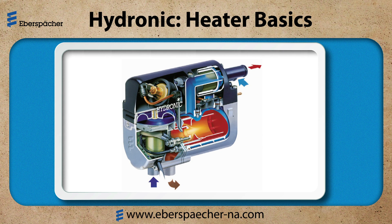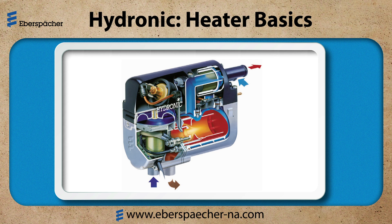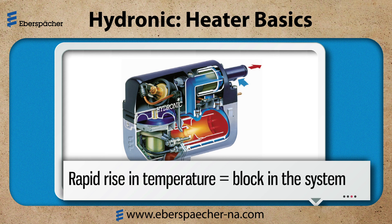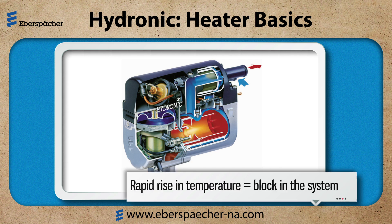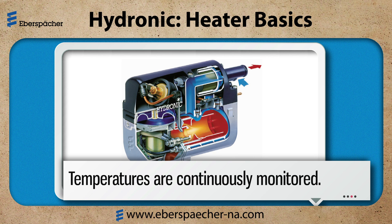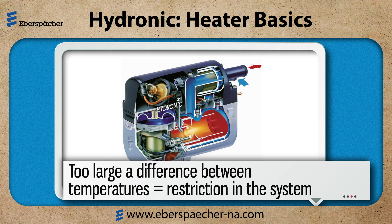Let's take a look at the Hydronic D5WSC. Here are the major components: the fuel metering pump, which can be internal or external on this model, the circulation pump, and then the overheat and temperature sensors. These monitor the temperature of the coolant when it enters the heater and as it exits. If there is a rapid rise in temperature, then the unit will overheat and shut down — this is indicating a block in the system. Otherwise, they will continuously monitor temperatures. They run parallel to each other on a graph; if they separate too far, this indicates a restriction in the system and again the heater will overheat and shut down.